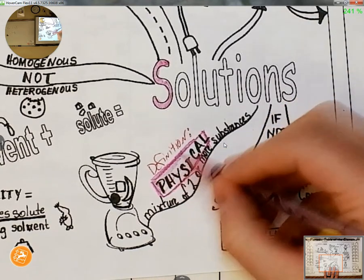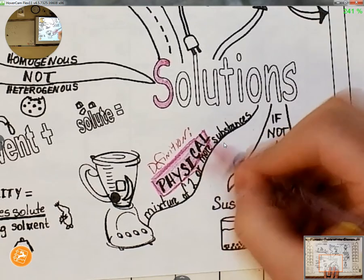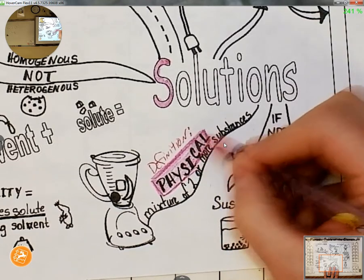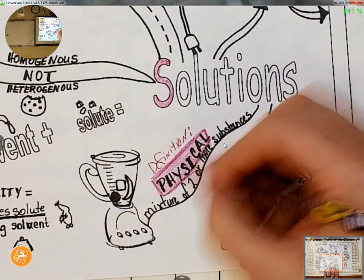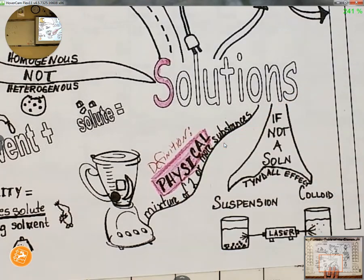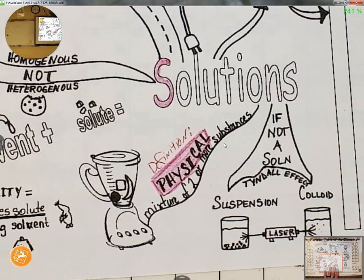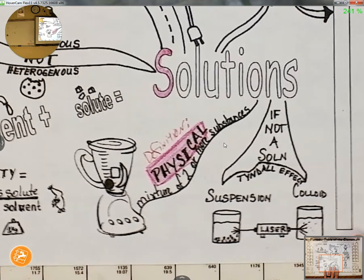Now if it's a physical mixture, that means that it's not a chemical mixture. We're not making new compounds when we mix stuff up. We're not putting together things with new chemical formulas. It is strictly a physical mixture.